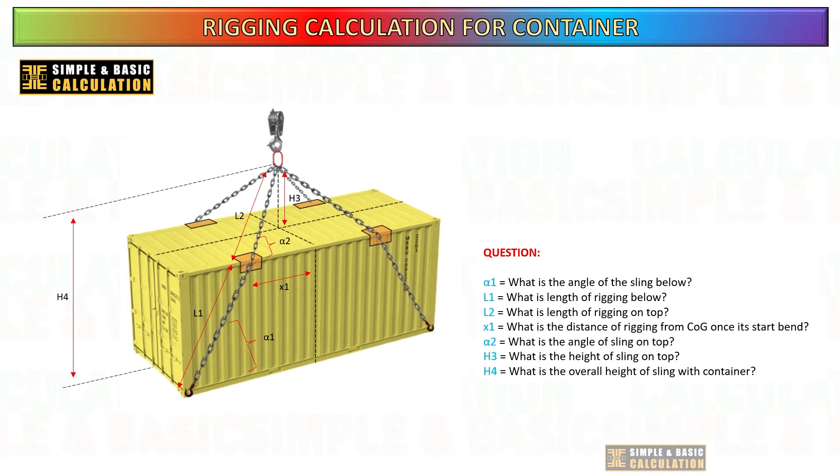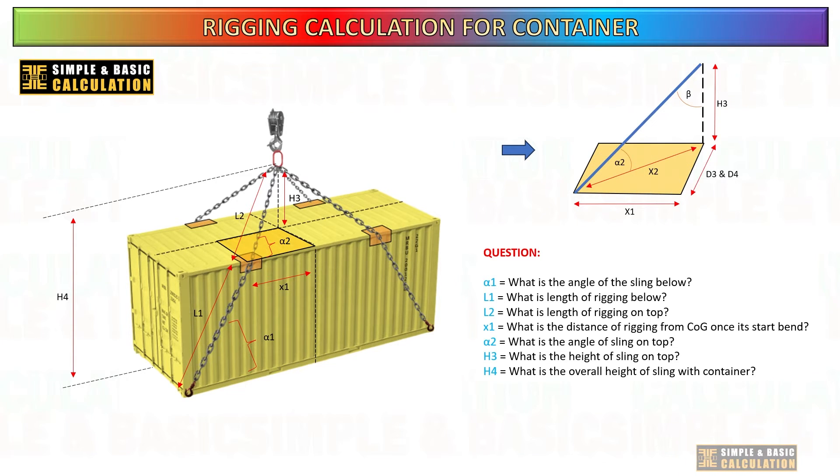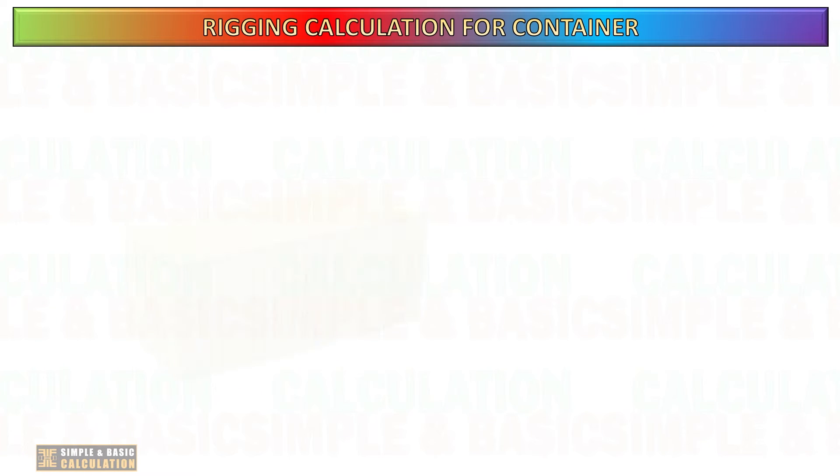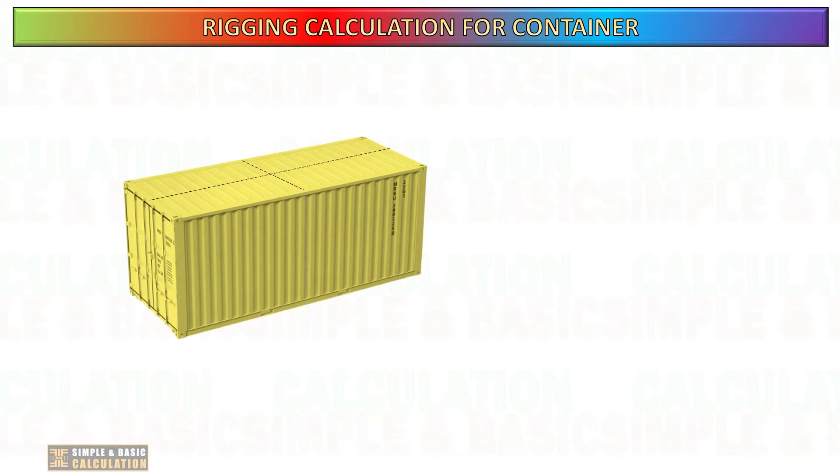This type of calculation involves multiple steps. So I created a spreadsheet for this; later in this video you will see how it works. Once the sling begins to bend over the container, it creates a new angle for the sling. We must determine the sling angle at the top of the container, as this angle has the ability to further decrease the safe working load of the sling. However, the angle of the sling depends on its length. As the length of the sling increases, the angle also increases.